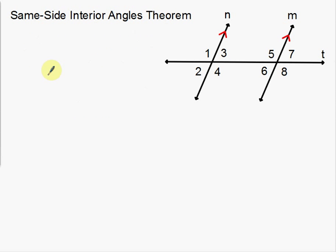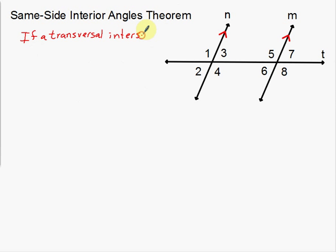The next one we're going to talk about is the same-side interior theorem. Same-side interior goes over the same setup that the previous one did. We're going to look at these same-side interior angles. Notice here on my diagram, 3 and 5 are same-side, and 4 and 6 are same-side interior. So let's start with the hypothesis — always got to start with what we know. If a transversal intersects two parallel lines, then —